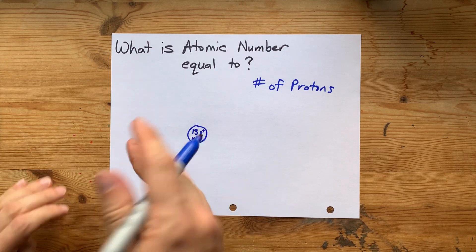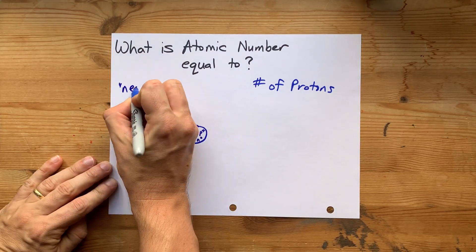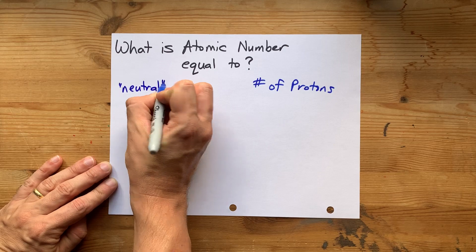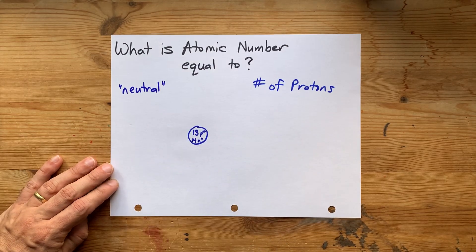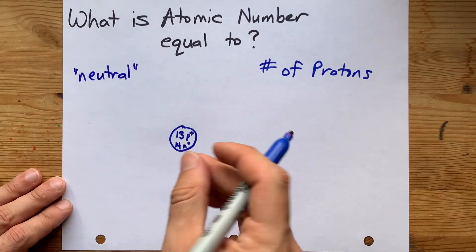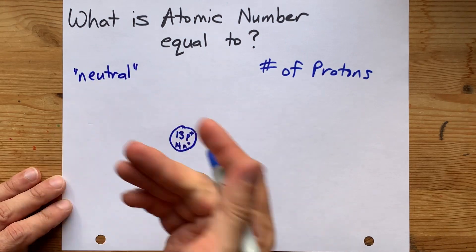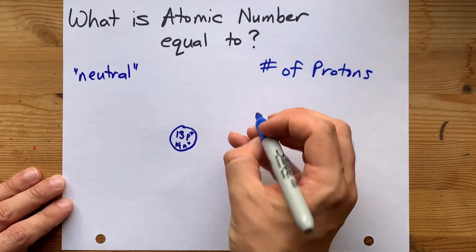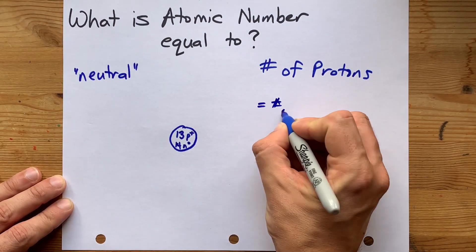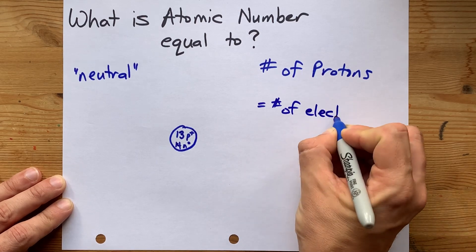Now, if the atom is neutral, i.e. if your teacher says that there is no charge on the atom, or if they say it's a neutral atom, it also equals the number of electrons that are there.